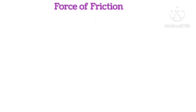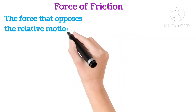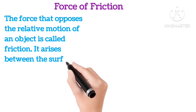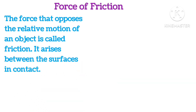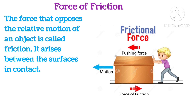Force of friction. The force that opposes the relative motion of an object is called friction. It arises between the surfaces in contact. As you can see in the picture, there is a force applied on the object called pushing force which causes the motion of the object, and another force acting in the opposite direction of the applied pushing force which restricts the object's motion — that is the friction force.